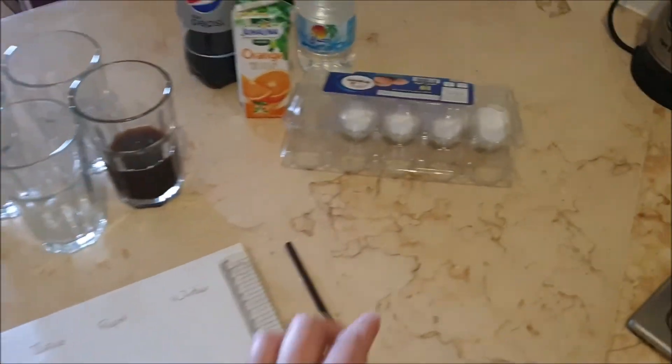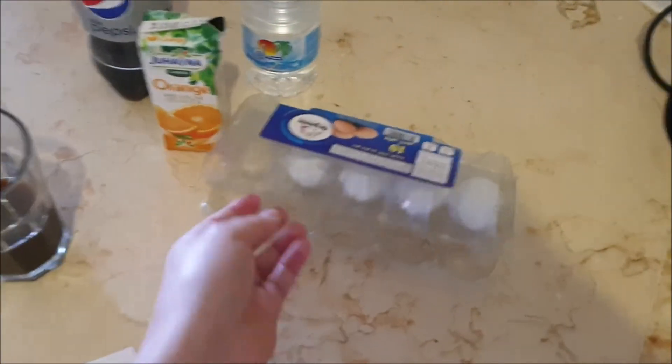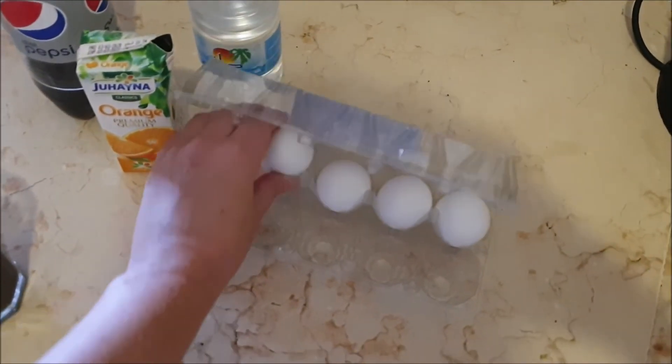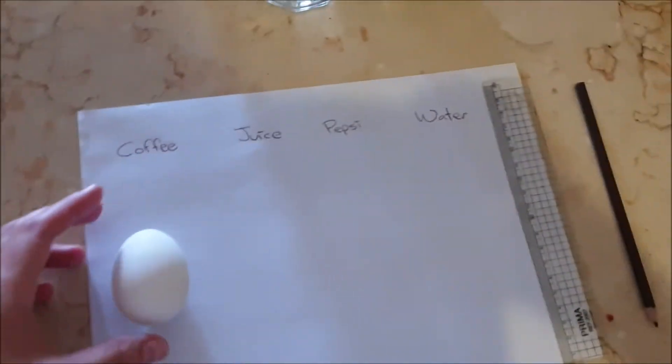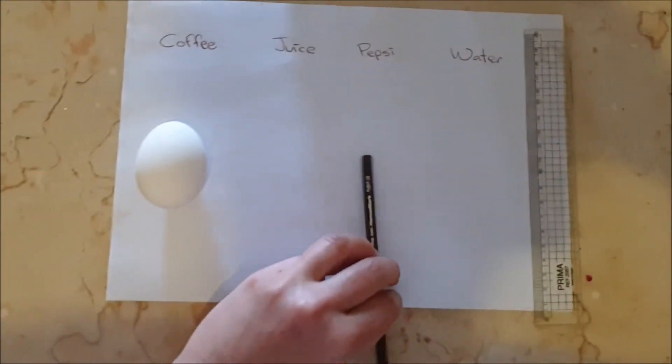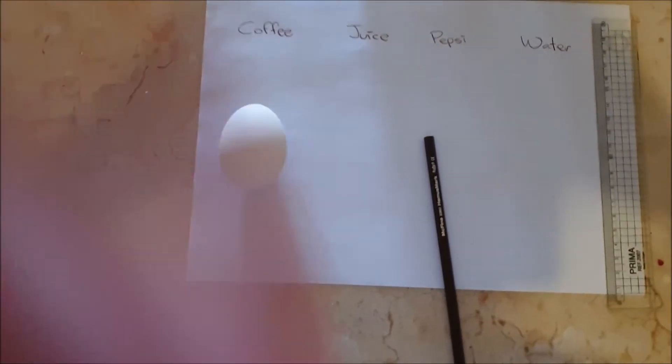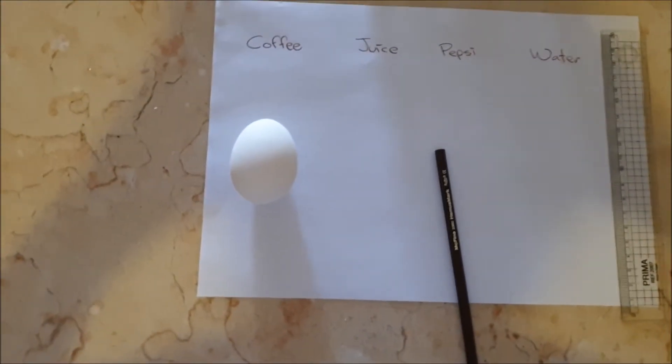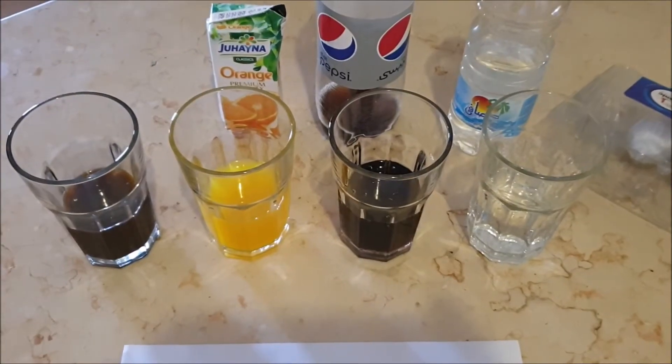What we're going to do is we're going to take one of the eggs for each one of the items. So what we need to do is we need to actually measure the mass of the eggs, the dimensions of the eggs.